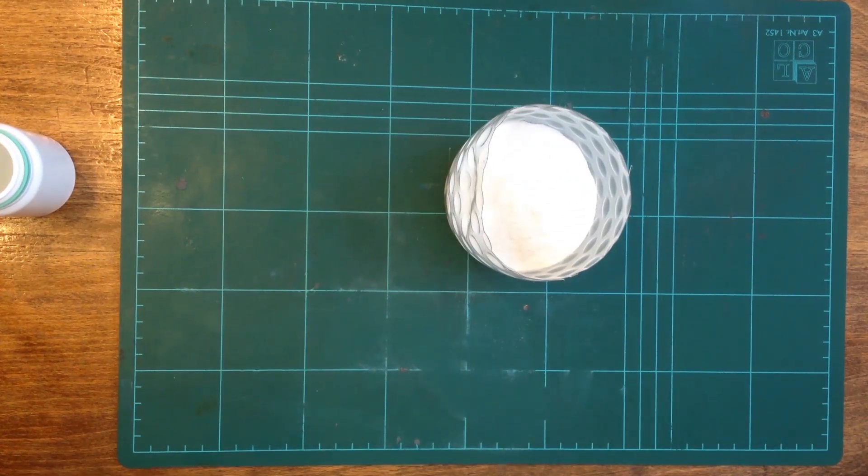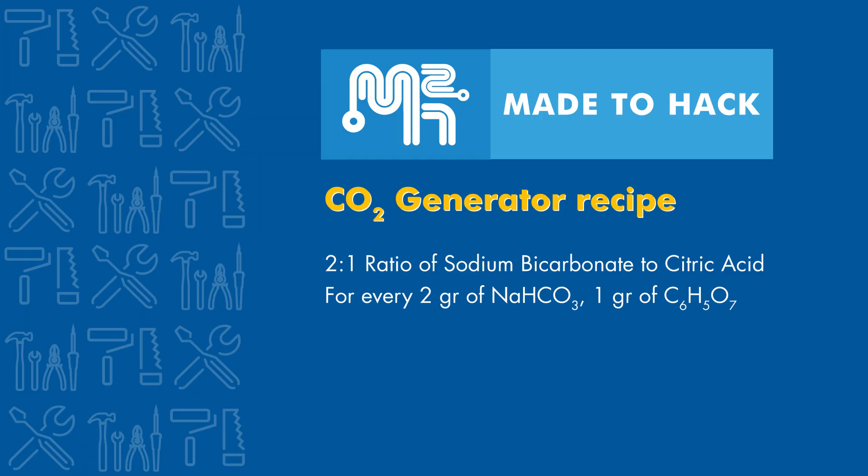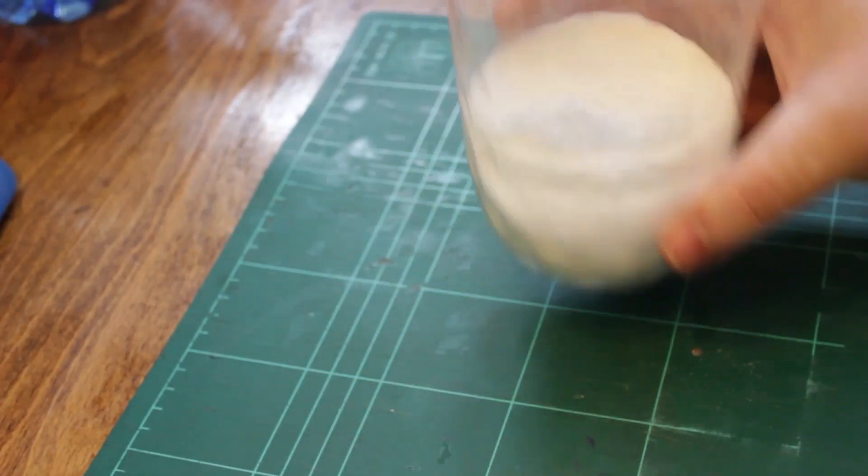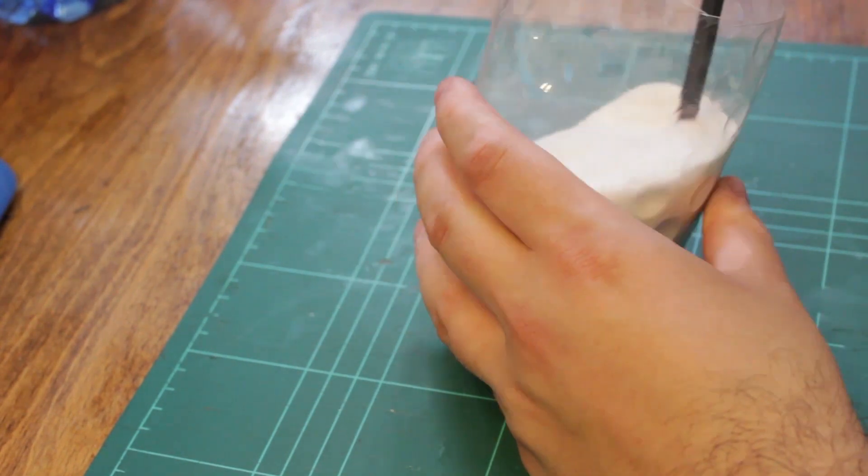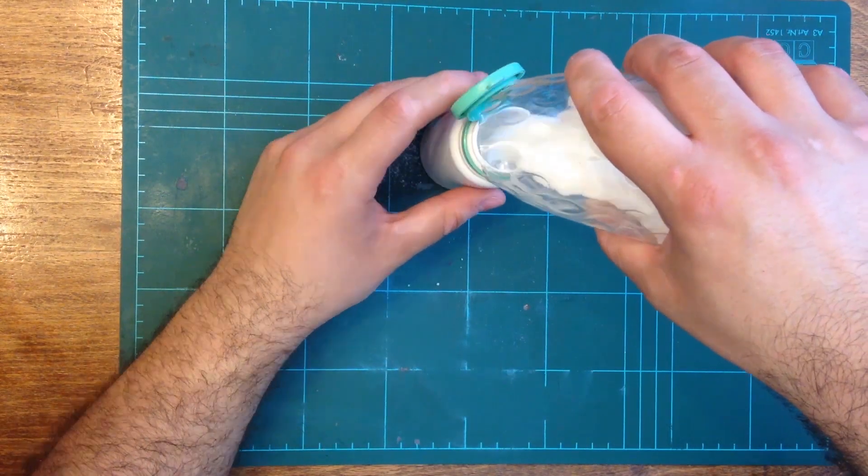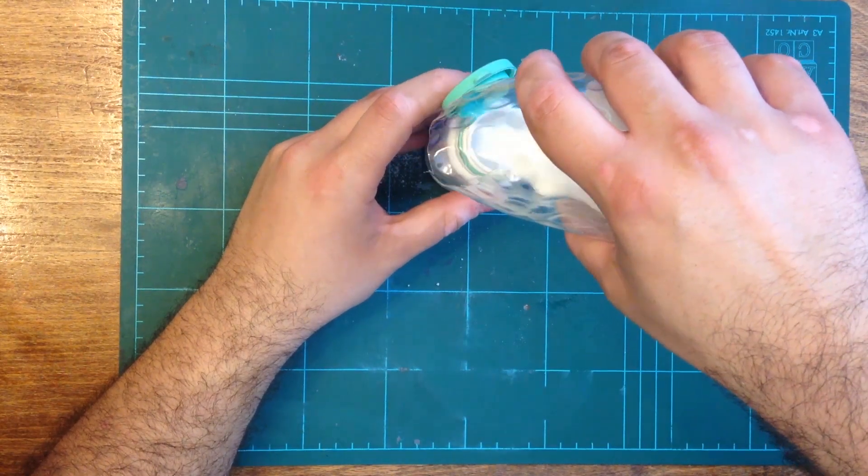I begin by preparing a mix of two parts sodium bicarbonate, also known as baking soda, and one part citric acid, also known as lemon salt. Both of these ingredients are readily found in the baking aisle at your local supermarket in case you don't have them in your house to begin with.